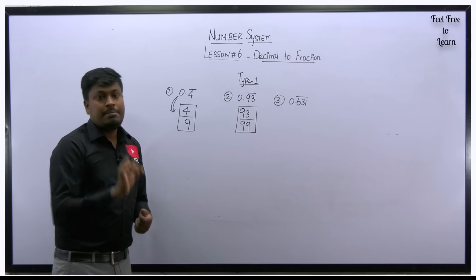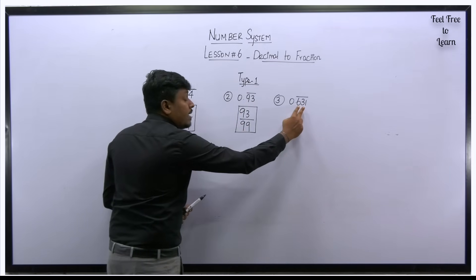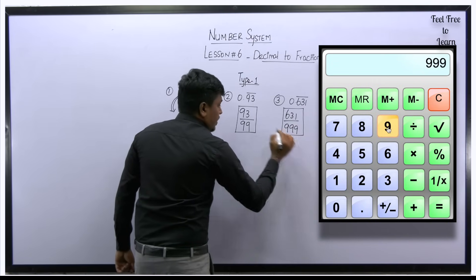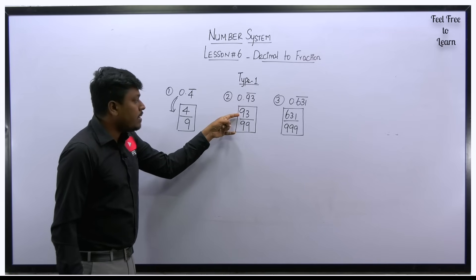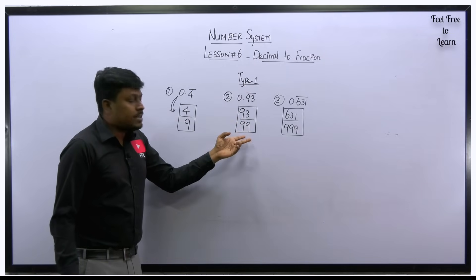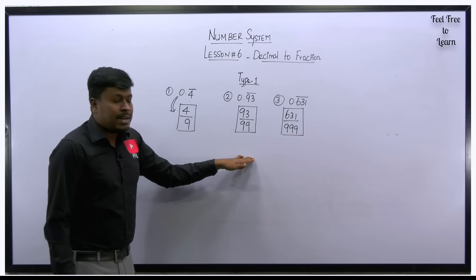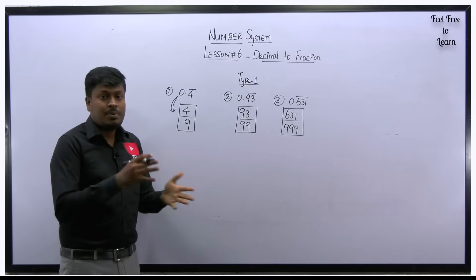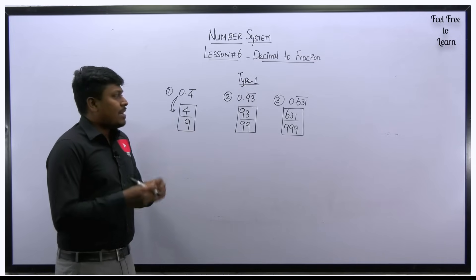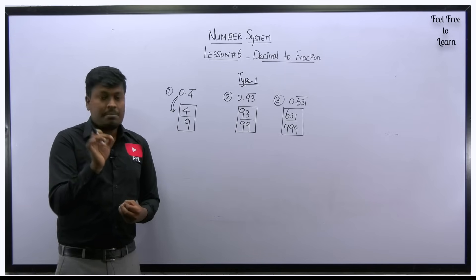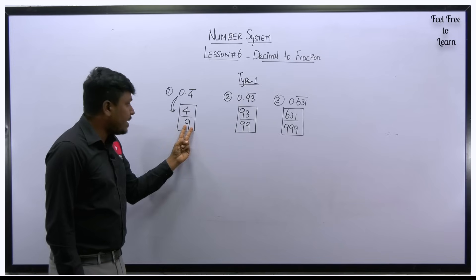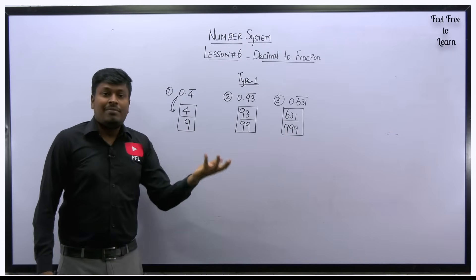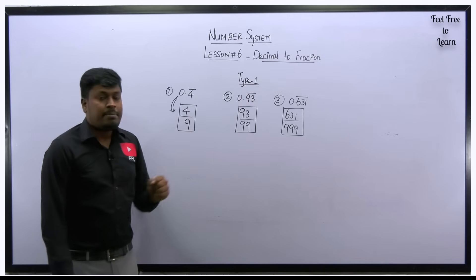For 0.631 bar with three digits under the bar, write 631 in the numerator and 999 in the denominator. You can simplify: 631/999 = 211/333. The rule for Type 1: for one bar digit divide by 9; for two bar digits divide by 99; for three bar digits divide by 999; for five bar digits divide by 99999 — that's it.